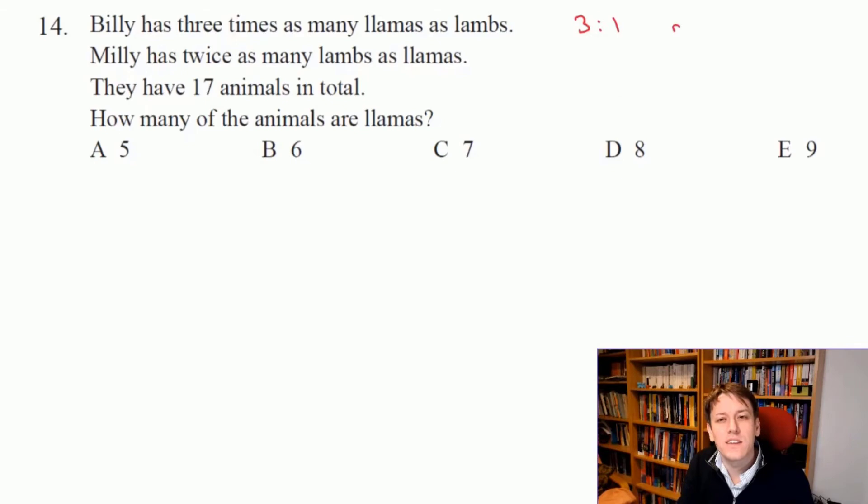Because for every lamb there's three llamas. Milly has twice as many lambs as llamas, so hers are in the ratio of 2 to 1.